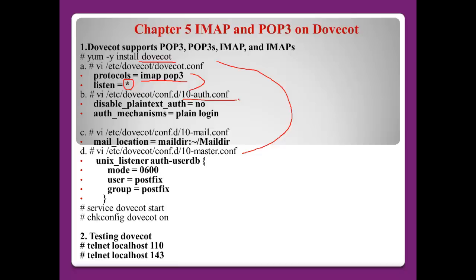We need to configure two lines here: disable_plaintext_auth = no, and auth_mechanisms = plain login. This means Dovecot needs authentication, but this authentication can be implemented by plaintext without any encryption. Using these two lines, Dovecot will support authentication by plaintext.